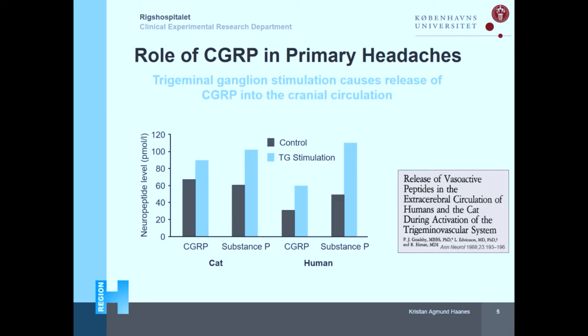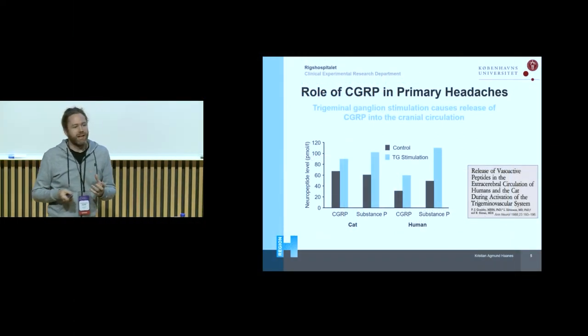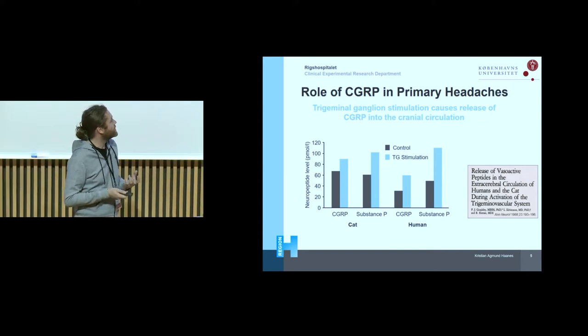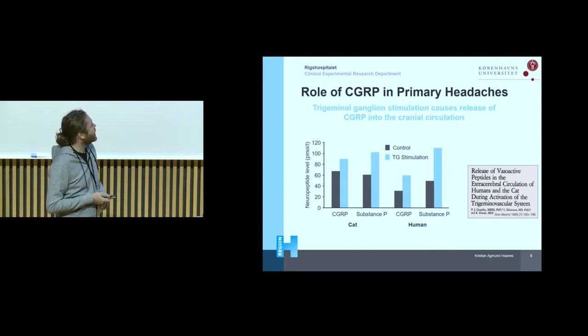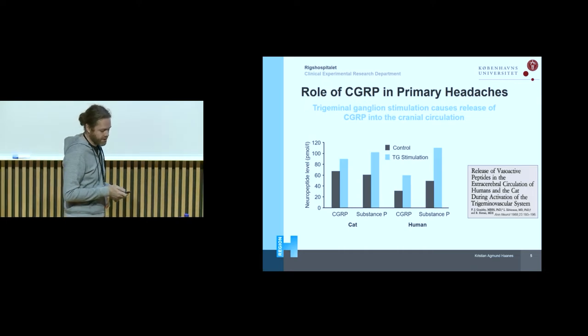Some of the first good studies used models in cats or humans — when there was trigeminal stimulation, it was shown that when you trigger a trigeminal ganglion in animals or humans, you get release of some of these neuropeptides. This really showed that when you stimulate the trigeminal vascular system, you get release of neuropeptides — both CGRP and substance P, which is an important neuropeptide in the trigeminal vascular system.